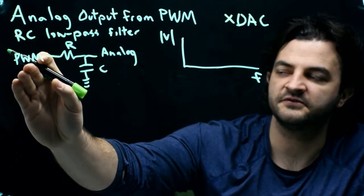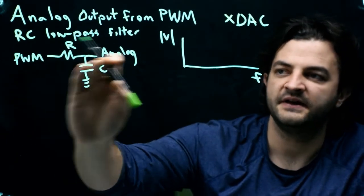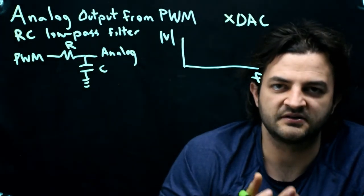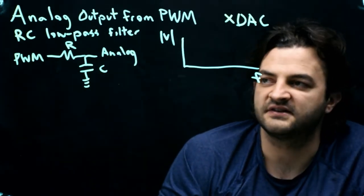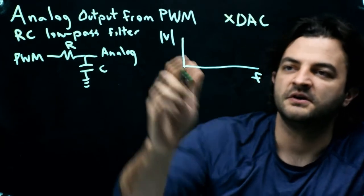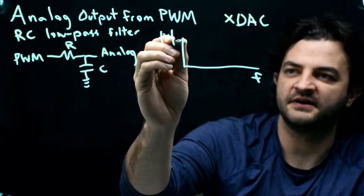As we increase the frequency of the PWM, the analog signal will smooth out the high frequency components of the square wave, leaving just the average. So there's a curve associated with the RC low-pass filter that looks like this.